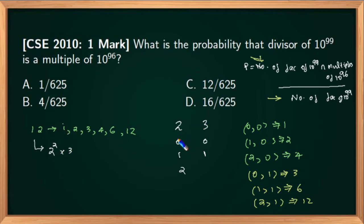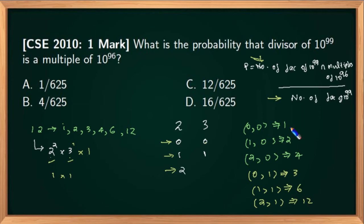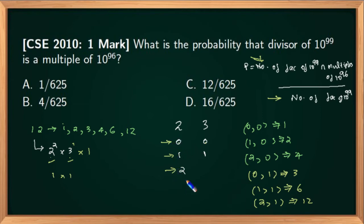Now, 12 = 2² × 3¹. For the factor 1, I take 0 twos and 0 threes — that gives 1, which is a divisor of any number. If I take 1 two and 0 threes I get 2. If I take 2 twos and 0 threes I get 4. If I take 0 twos and 1 three I get 3. If I take 1 two and 1 three I get 6, and if I take 2 twos and 1 three I get 12.